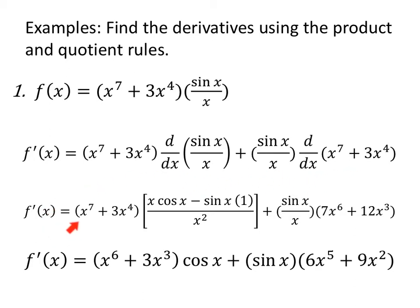In our next line, we'll have x to the 7th plus 3x to the 4th. Then we'll use the quotient rule for sine of x over x: that's low d high — cosine of x — minus high sine of x, d low — derivative of x is 1 — all over low squared, so x squared in the denominator. Plus sine of x over x. And we'll take the derivative of the polynomial portion to get 7x to the 6th plus 12x cubed. This is a great answer — fantastic answer if you're not doing anything else with it.